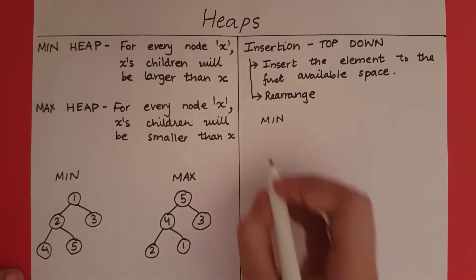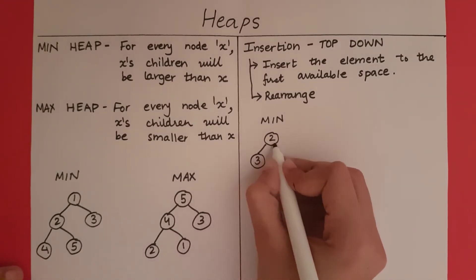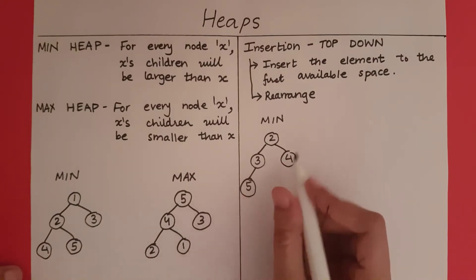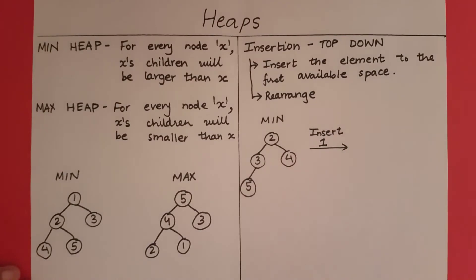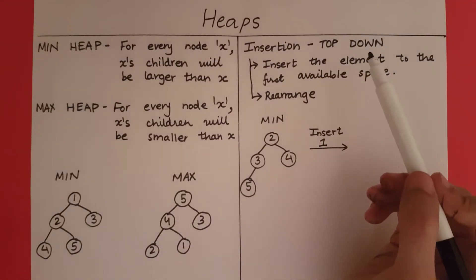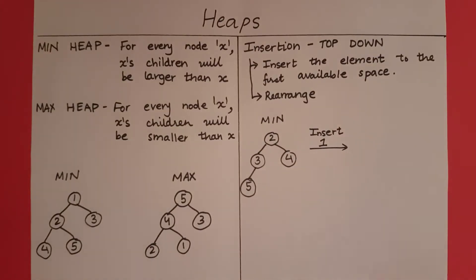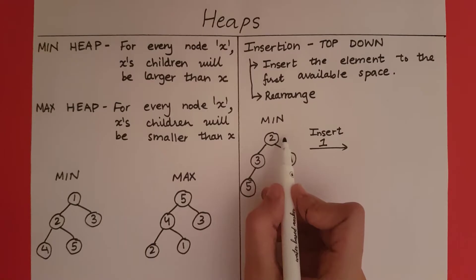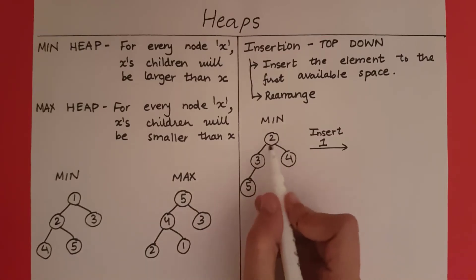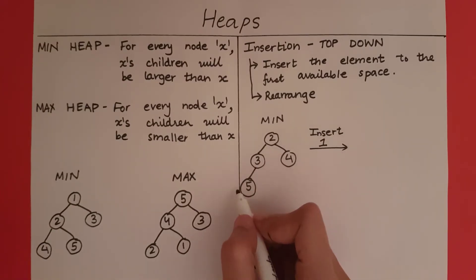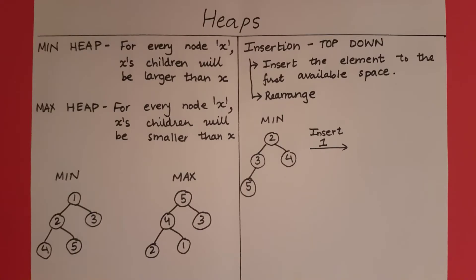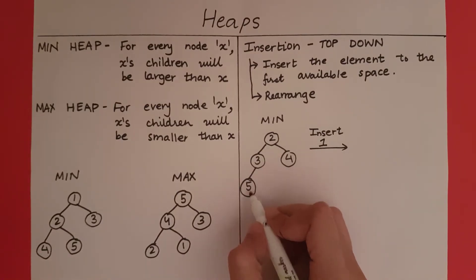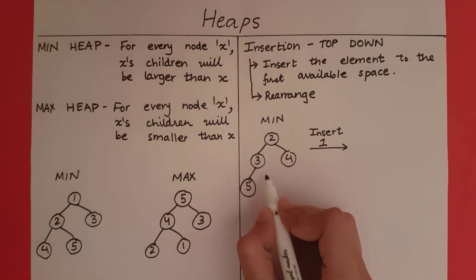Let's say we already have a heap. We want to insert one. The first step is to insert the element to the first available space. We can see that this level is full, the next level is also full, and there is no place to add any more nodes. Coming to the next level, we have four spaces, out of which only one is free. Going from left to right, the first available space is chosen, and we insert one there.